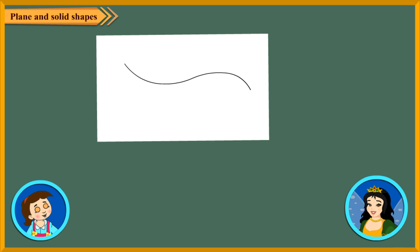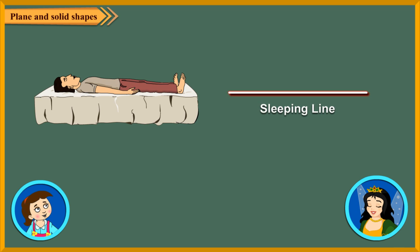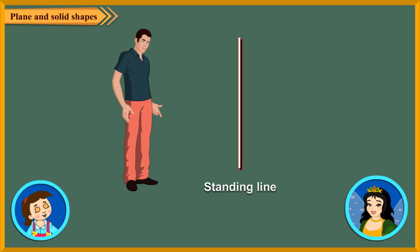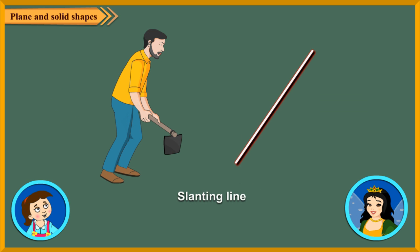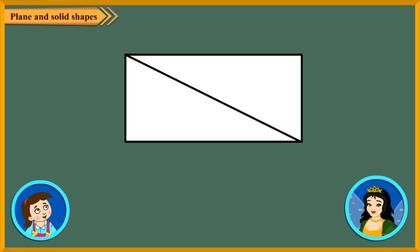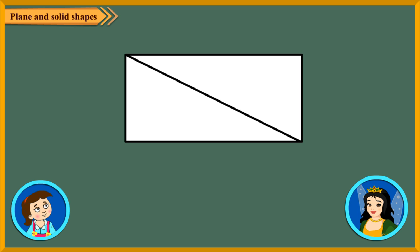Do you know, Neha, we have three kinds of straight lines? Sleeping line, standing line, and slanting line. Oh, it means this figure has two sleeping lines, two standing lines, and one slanting line. Absolutely correct.